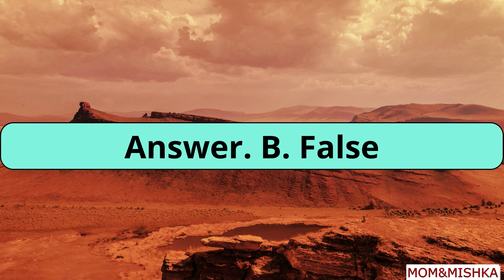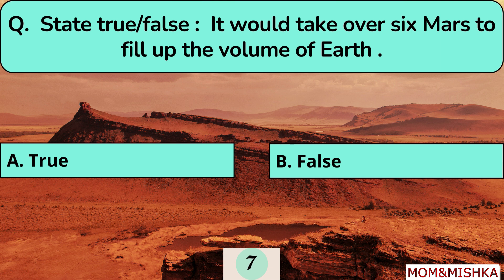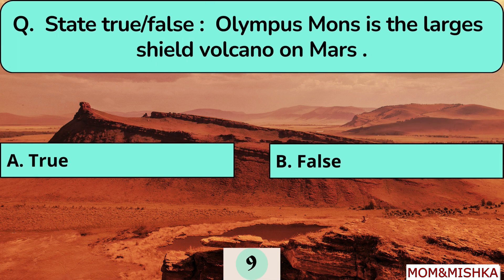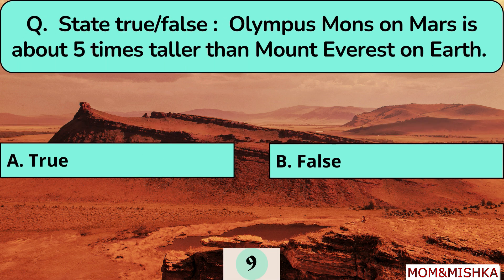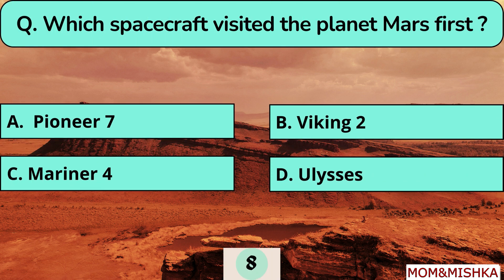A sunset on Mars is not red — that is false. The sunset on Mars is actually blue. It would take over six Mars planets to fill the volume of Earth — true. Olympus Mons is the largest shield volcano on Mars — true. Olympus Mons is approximately 2.5 times taller than Mount Everest on Earth, not five times — that is false.